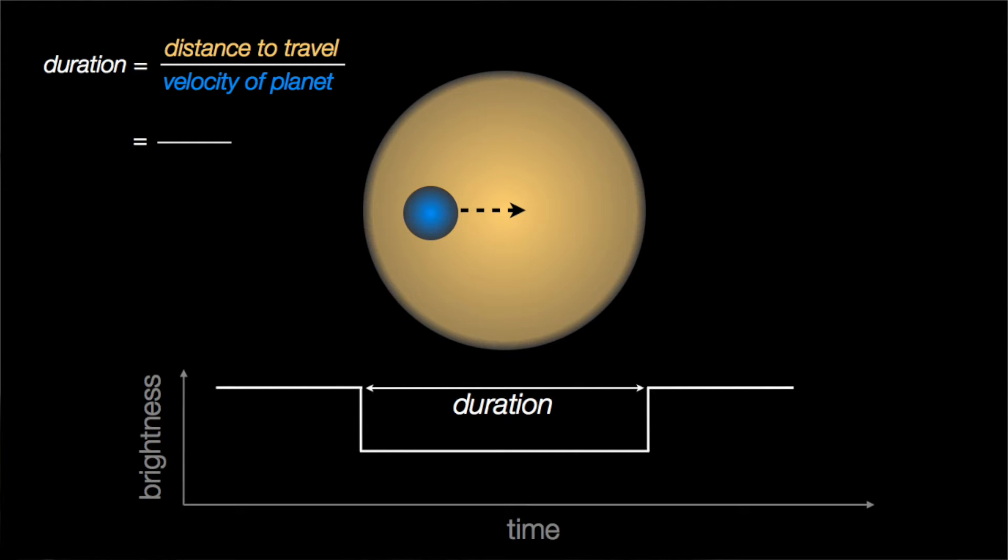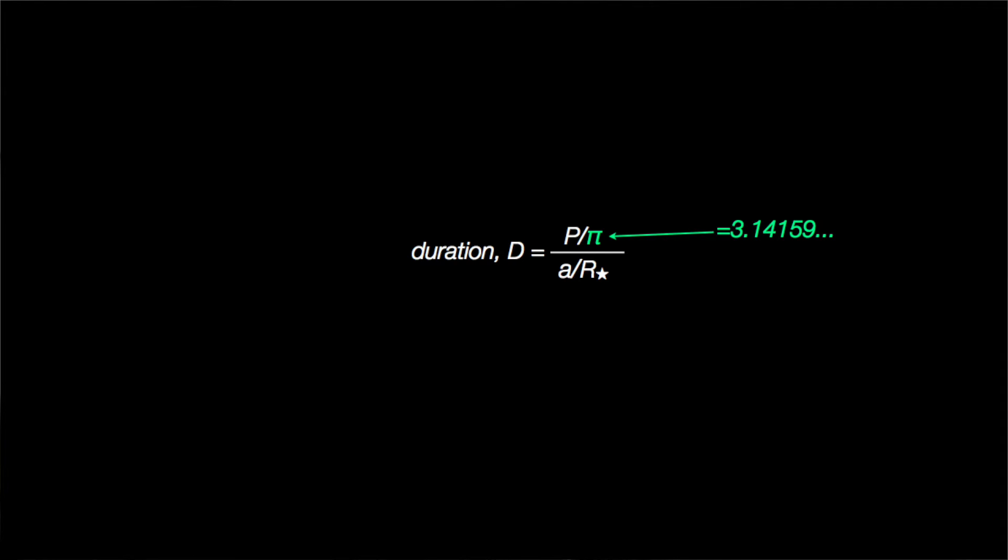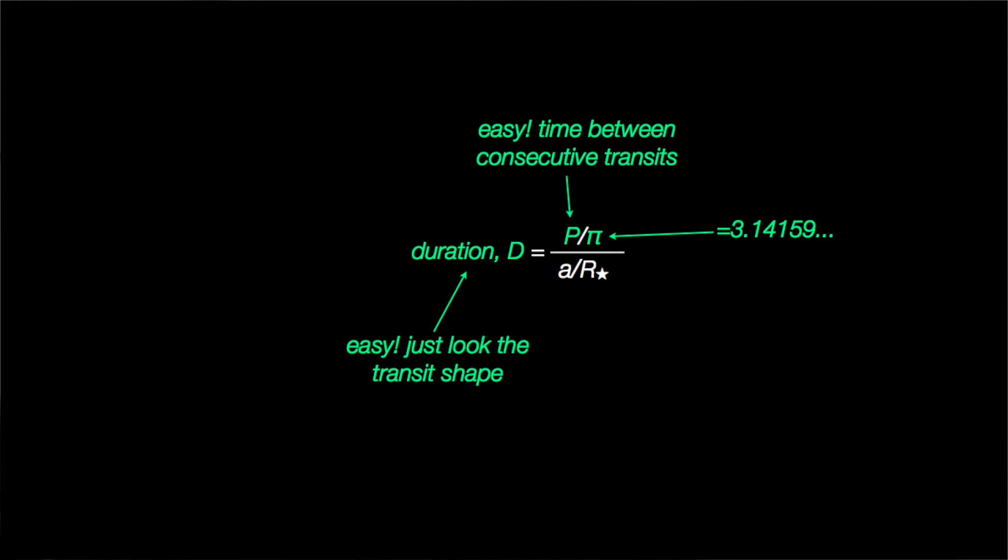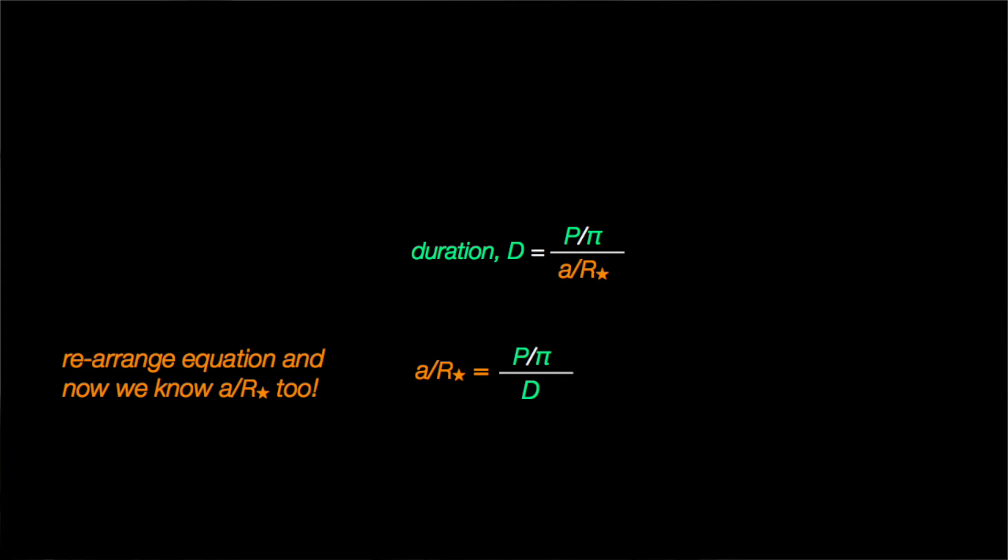So finally coming back to our transit, we now know that the distance the planet has to traverse is twice the radius of the star, and the velocity is 2πa over P. So we can actually solve for the duration now. We can write down that the duration of a planetary transit is going to be P over π divided by a over r star. So notice how I grouped some of those terms together, and that a over r star term is really important. By simply measuring the time difference between consecutive transits, we can always measure the orbital period fairly easily. And of course we can also measure the transit duration just by looking at the duration of the transit. So the only thing we don't know in this equation is a over r star. Or another way of saying that is that we can actually solve for a over r star by rearranging this equation. Okay so step one complete, we now know what a over r star is.